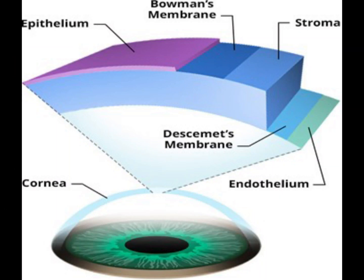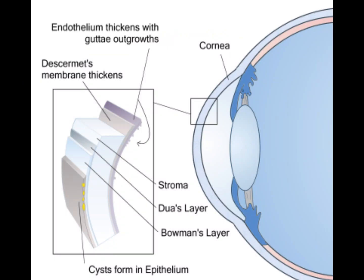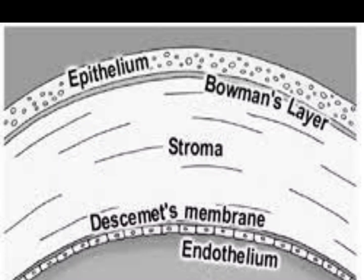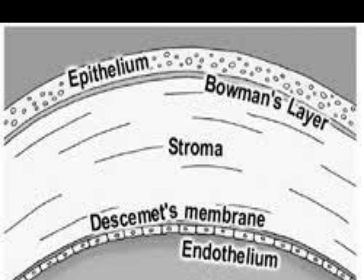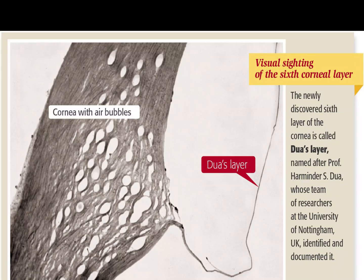Although appearing to be one clear membrane, the cornea is composed of five distinct layers of tissue, each with its own function. The epithelium is the thin outermost layer of fast-growing and easily regenerated cells. Bowman's layer consists of irregularly arranged collagen fibers and protects the corneal stroma; it is 8 to 14 microns thick. The stroma is the transparent middle and thickest layer, made up of regularly arranged collagen fibers and keratocytes — specialized cells that secrete the collagen and proteoglycans needed to maintain the clarity and curvature of the cornea.